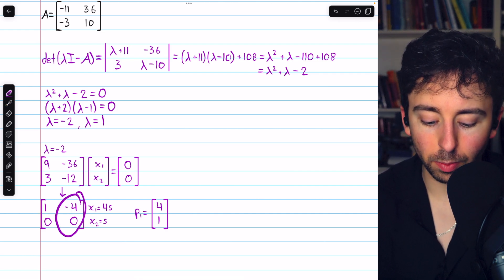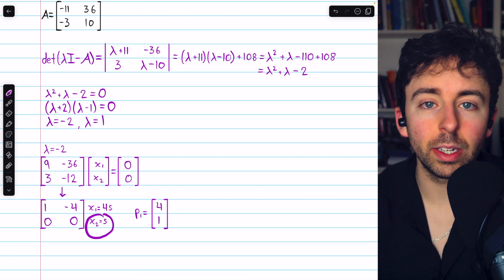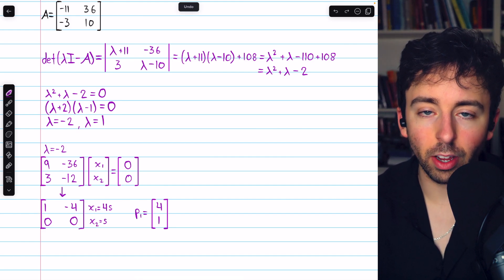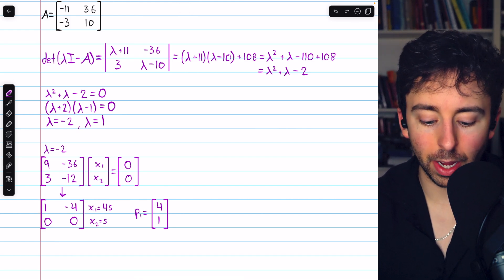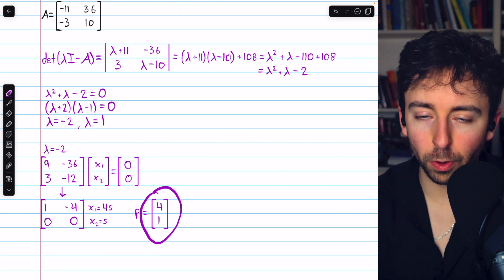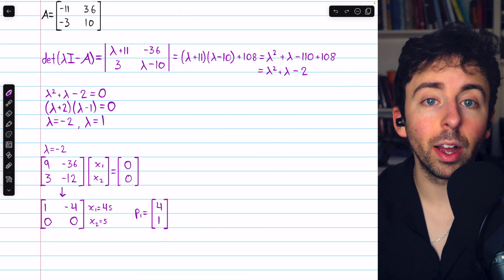That gets us to this reduced row echelon form. There's no leading entry in column 2, so x₂ is a free variable. Let's say x₂ = s. And then from row 1, we have that x₁ = 4s. And so, a basis for the eigenspace corresponding to this eigenvalue is this vector here, just those coefficients of s, so [4, 1].